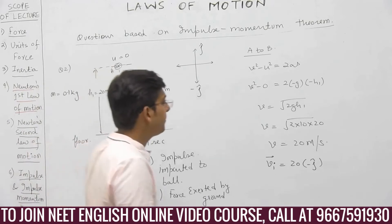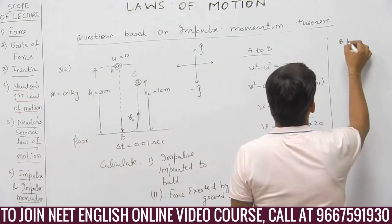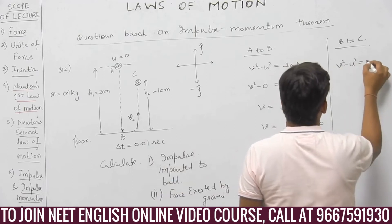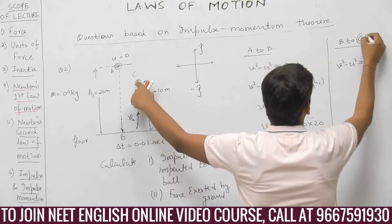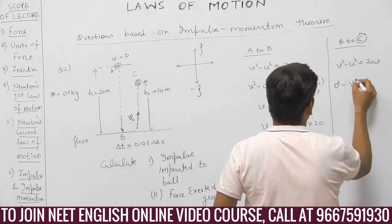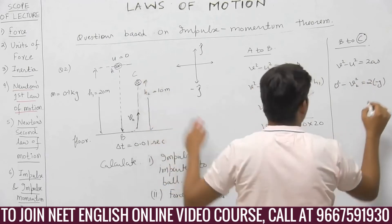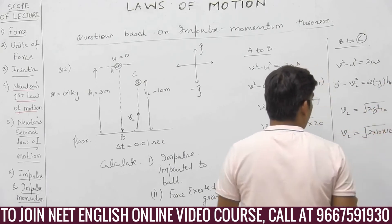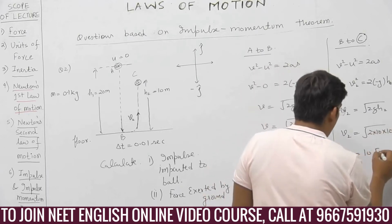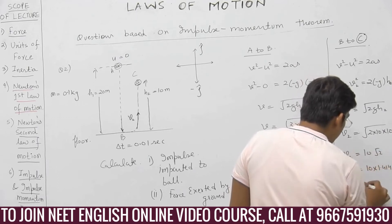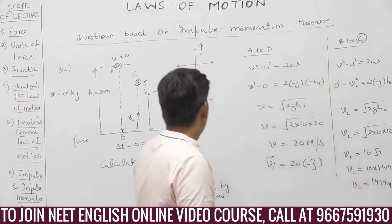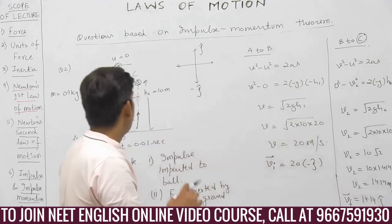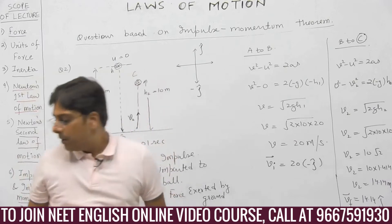Now studying motion from B to C: final velocity is 0 at the highest point. Using V² − U² = 2AS with final velocity 0, acceleration −g, displacement H₂: we get V₂ = √(2gH₂) = √(2 × 10 × 10) = 10√2 = 14.14 m/s. Since it is in the upward direction, the final velocity is 14.14 ĵ cap.